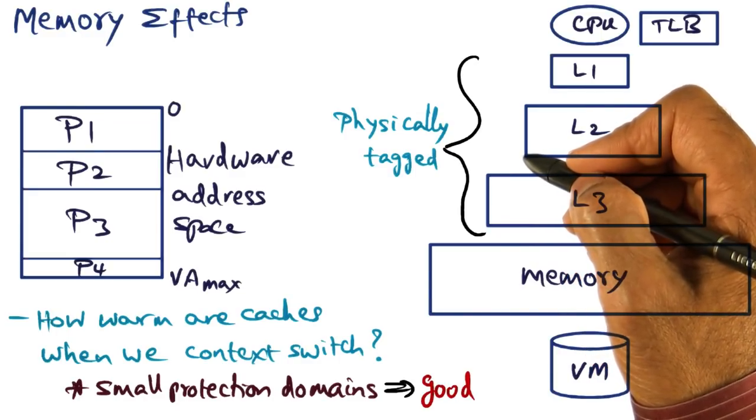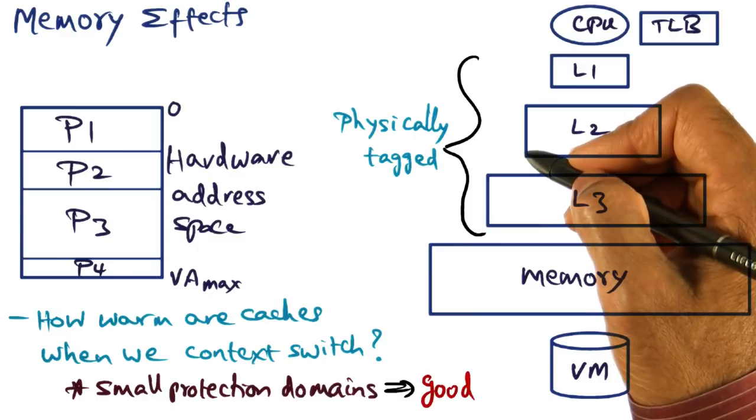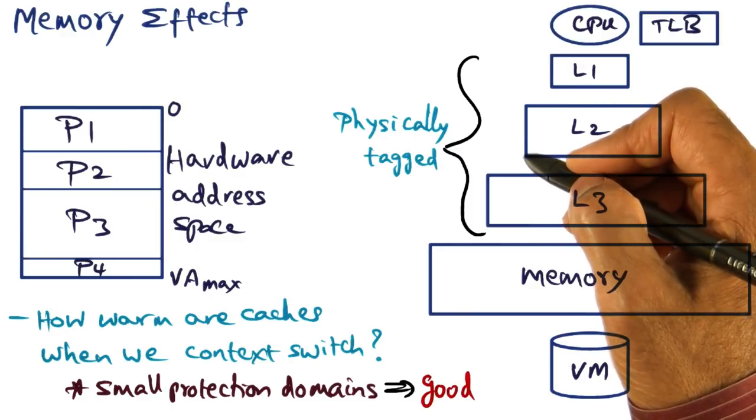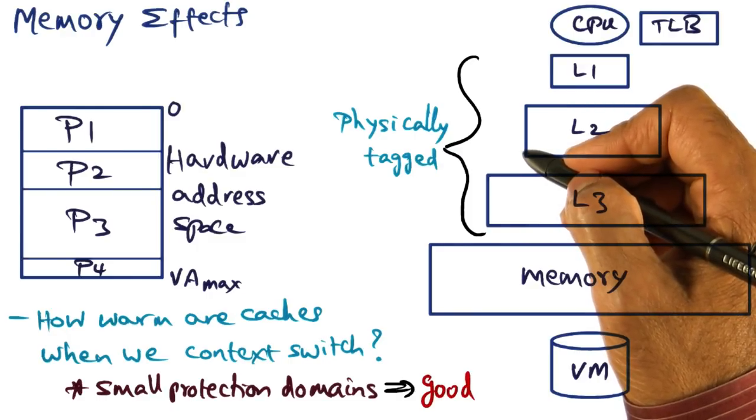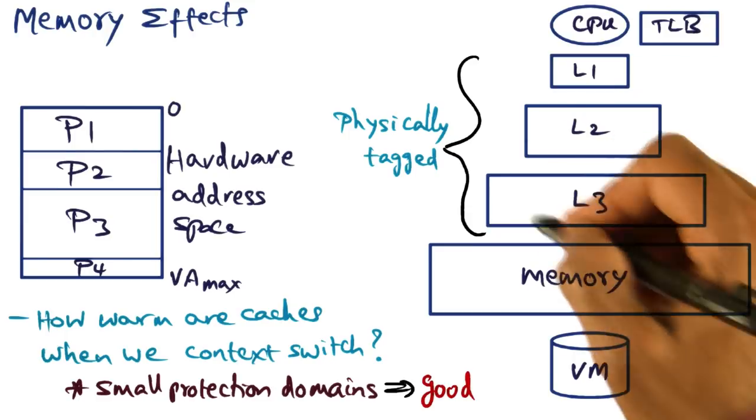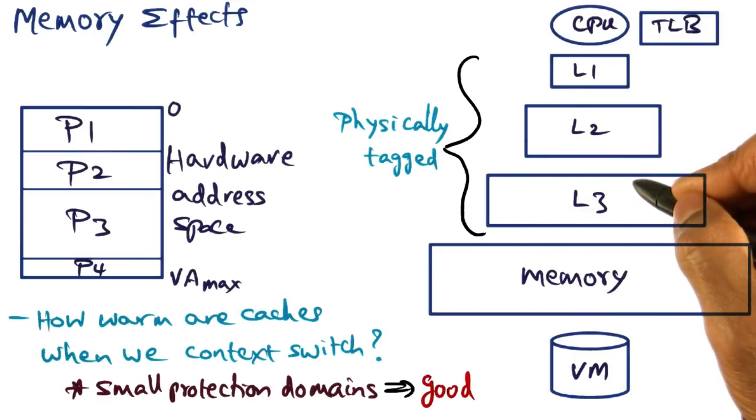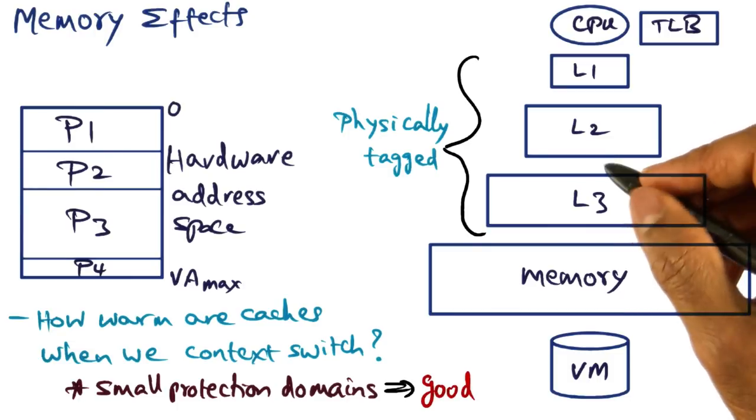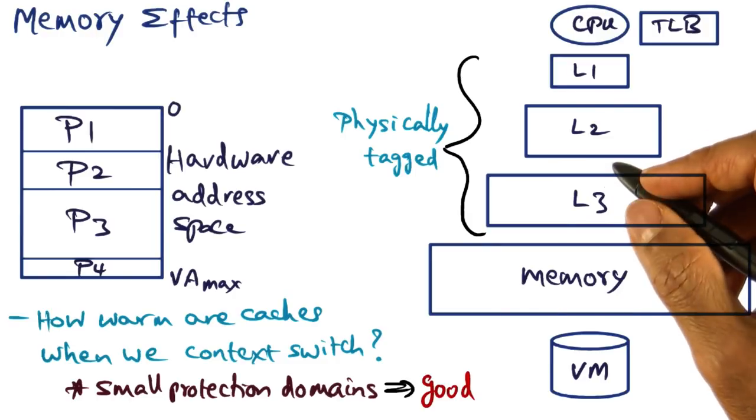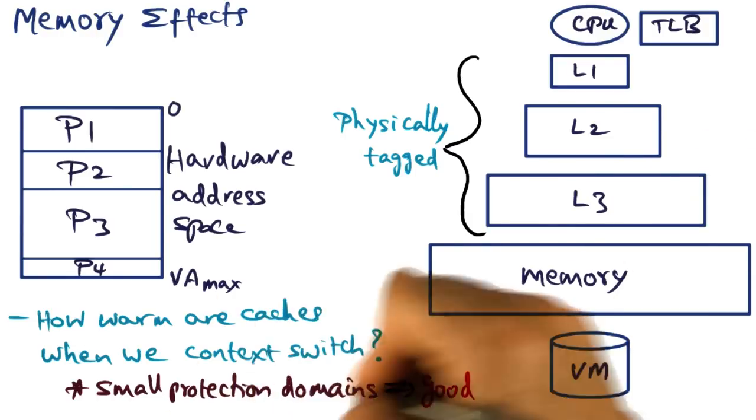And therefore, when we go from large protection domains or large subsystems in the context of a monolithic kernel, you have to incur the cache pollution. So that ill effect is unavoidable for large protection domains. So the only place where a monolithic kernel can win or an exokernel can win or a SPIN can win is in small protection domains.